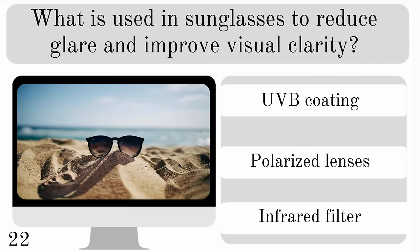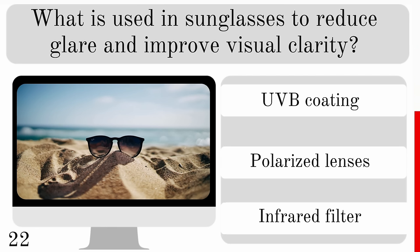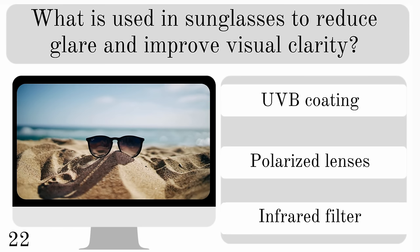What is used in sunglasses to reduce glare and improve visual clarity? Is it a UVB coating, polarised lenses or an infrared filter? And the answer is polarised lenses.